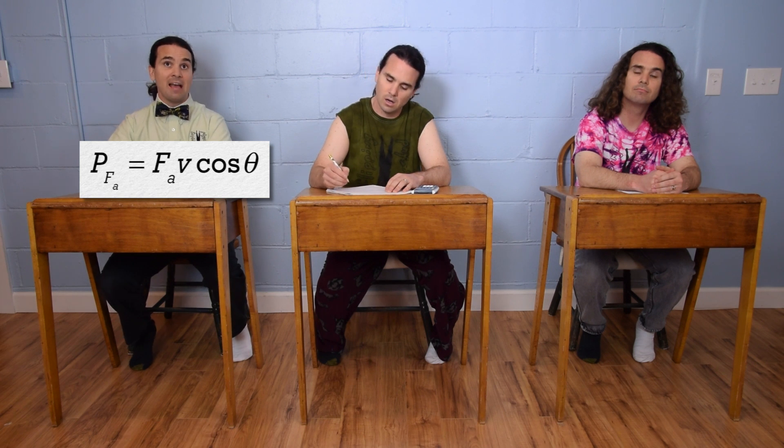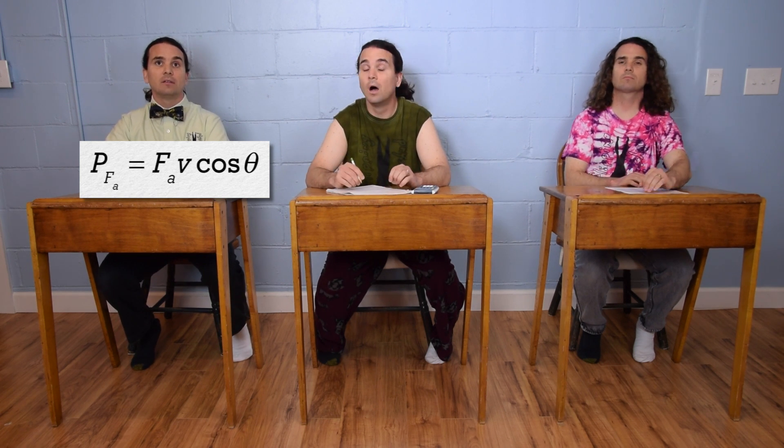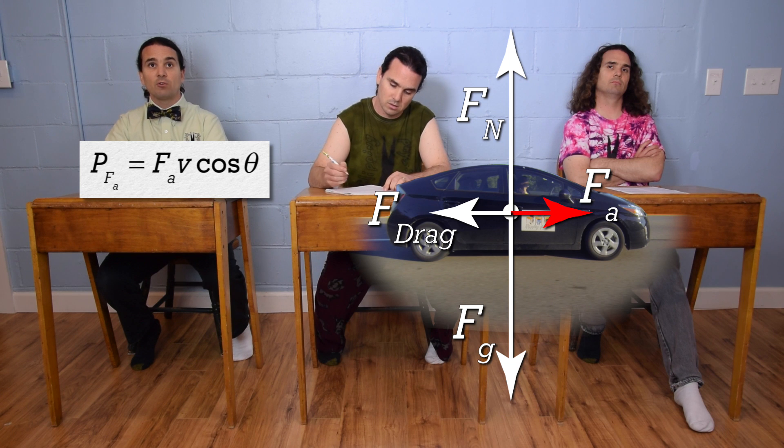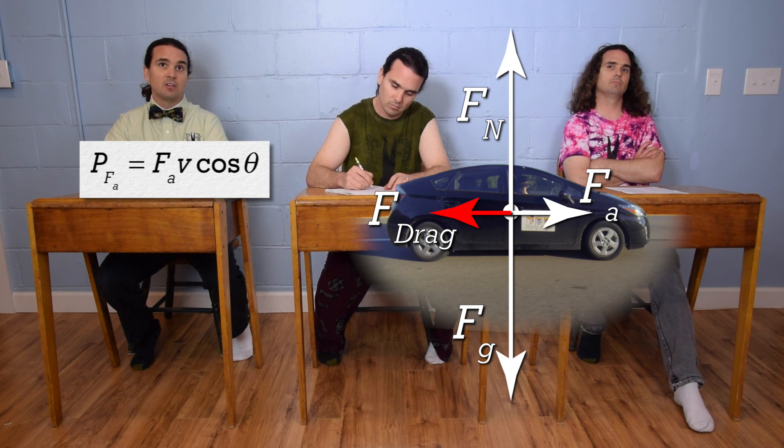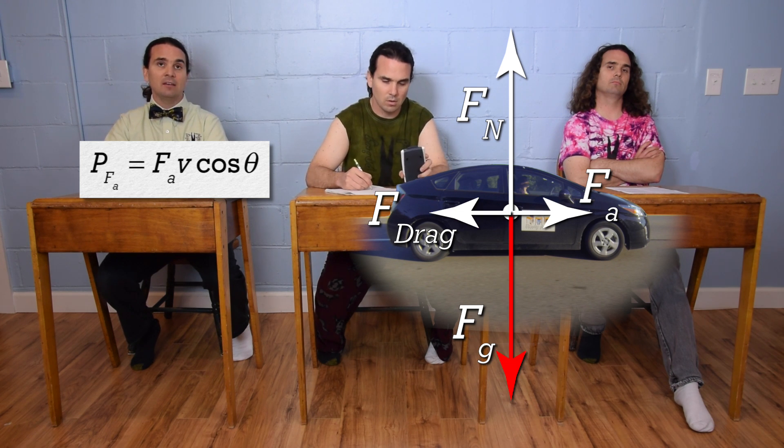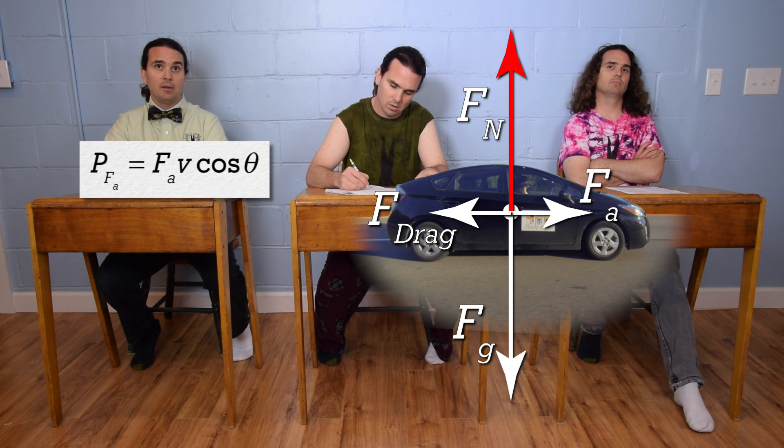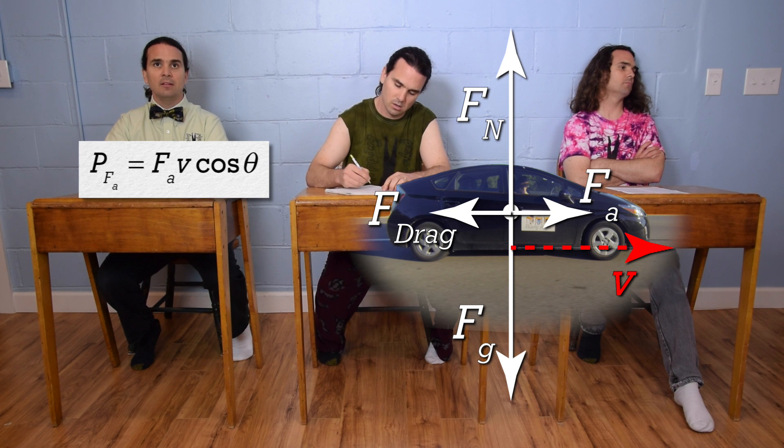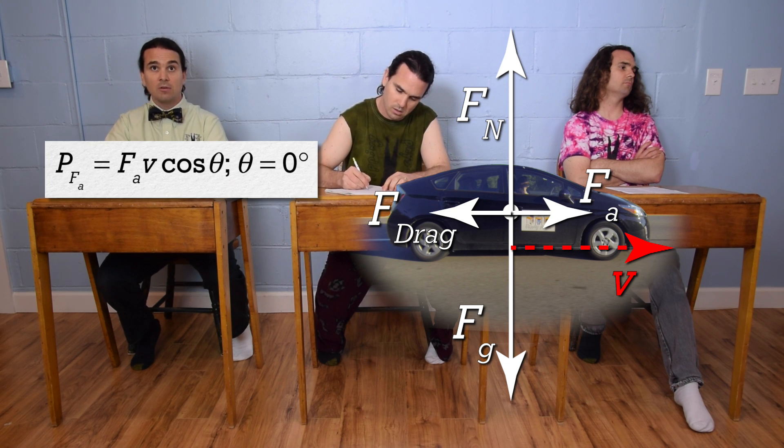We already know the value of the velocity. Let's draw a free body diagram. The force applied is to the right, the force of drag is to the left, the force of gravity is down, and the force normal is up. The velocity and the force applied are both to the right, so the angle in our equation is zero degrees.